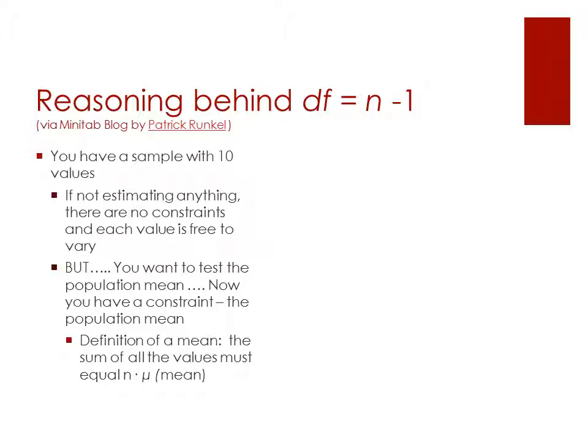Now, if you're not estimating anything, there's no constraints, and variables are free to vary at any value. However, we're going to want to test a population mean. That's the kind of test we're looking at for Section 8.4, a one-sample t-test. As soon as you begin with that step of saying you want to test a population mean, you now have a constraint upon your problem, and that is the population mean itself.